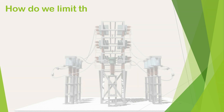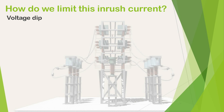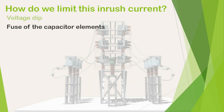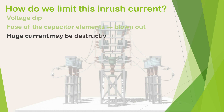How do we limit this inrush current? Otherwise it will create problems in the system. Because of this huge current flowing through the system, the voltage of the system suddenly dips. Due to this voltage dip, the relay can actuate under-voltage tripping in the circuit, which may disturb the power system stability. Also, due to this huge inrush current, the fuse of the capacitor elements inside the capacitor units may be blown out, and this huge current may be destructive for the capacitor bank itself and for other equipment connected in the power system.